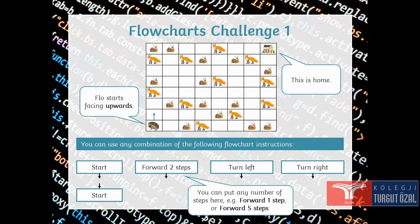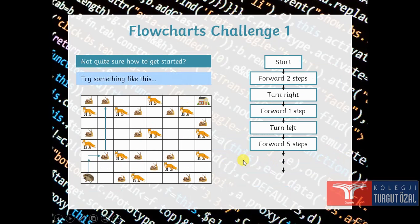You can use any combination of the following flow chart instructions: Start, forward two steps, turn left, turn right. These are the processes that you can use here. Try something like this. Forward two steps, turn right, forward one step. Then turn left, forward five steps. Then turn, think about this.